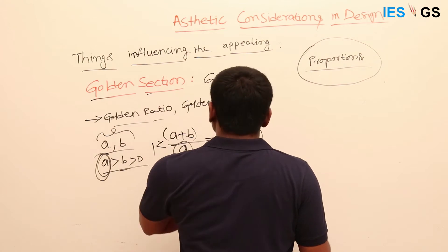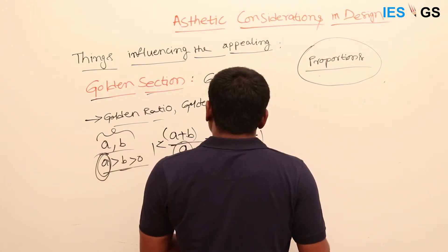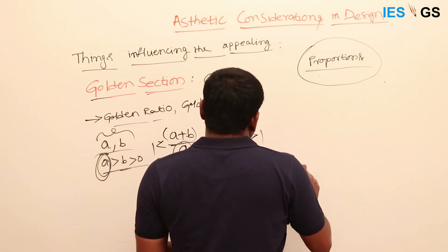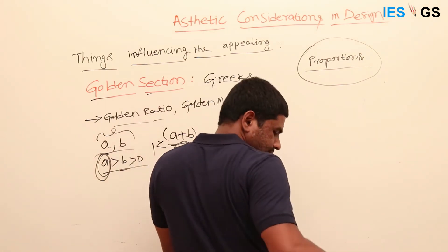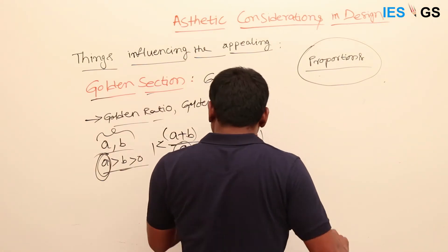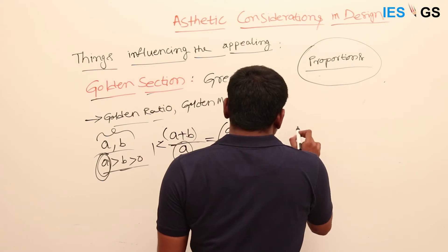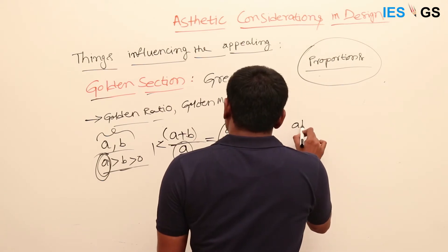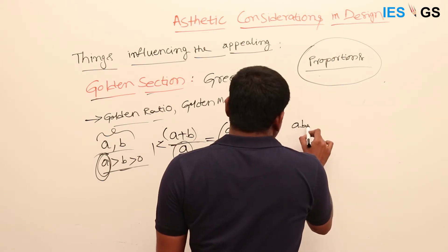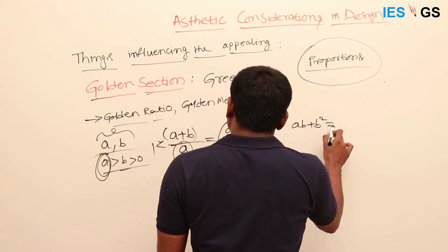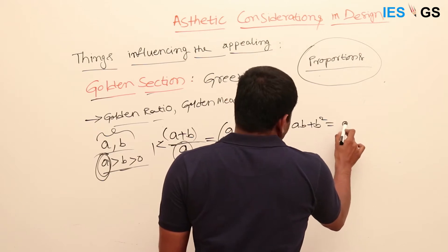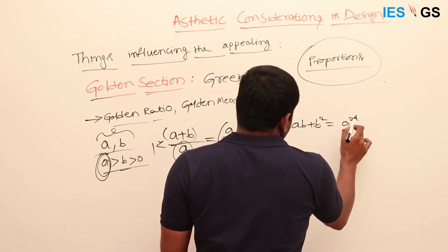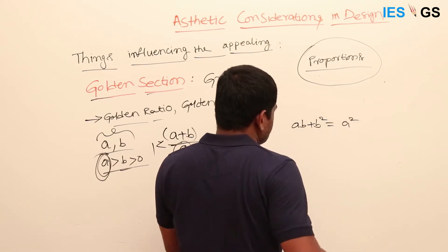If you multiply it out, it becomes ab plus b² equal to a².